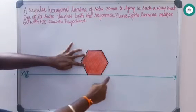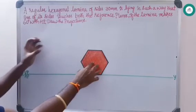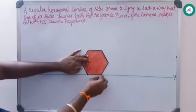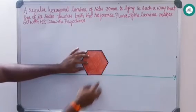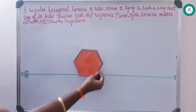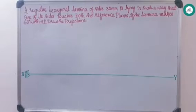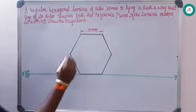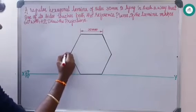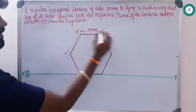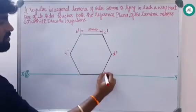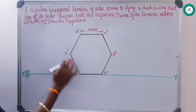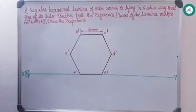From the top view it looks like a line — draw the top view. Next, looking from the left end, the left side view is always drawn on the right profile plane — draw its left side view also. After drawing the front view of the hexagonal lamina, name all the corners: a-dash, b-dash, c-dash, d-dash, e-dash, and f-dash. Next, from all these points in the front view, project down to the XY line to get the top view.